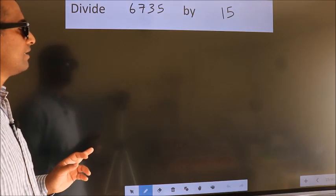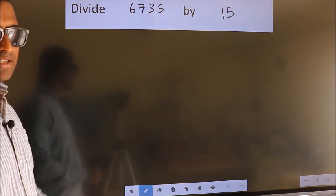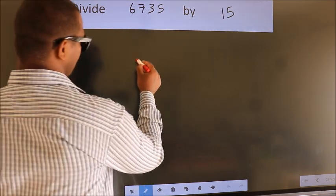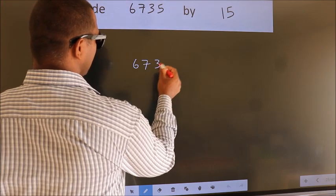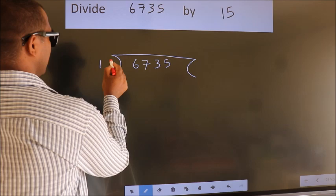Divide 6735 by 15. To do this division, we should frame it in this way. 6735 here, 15 here.